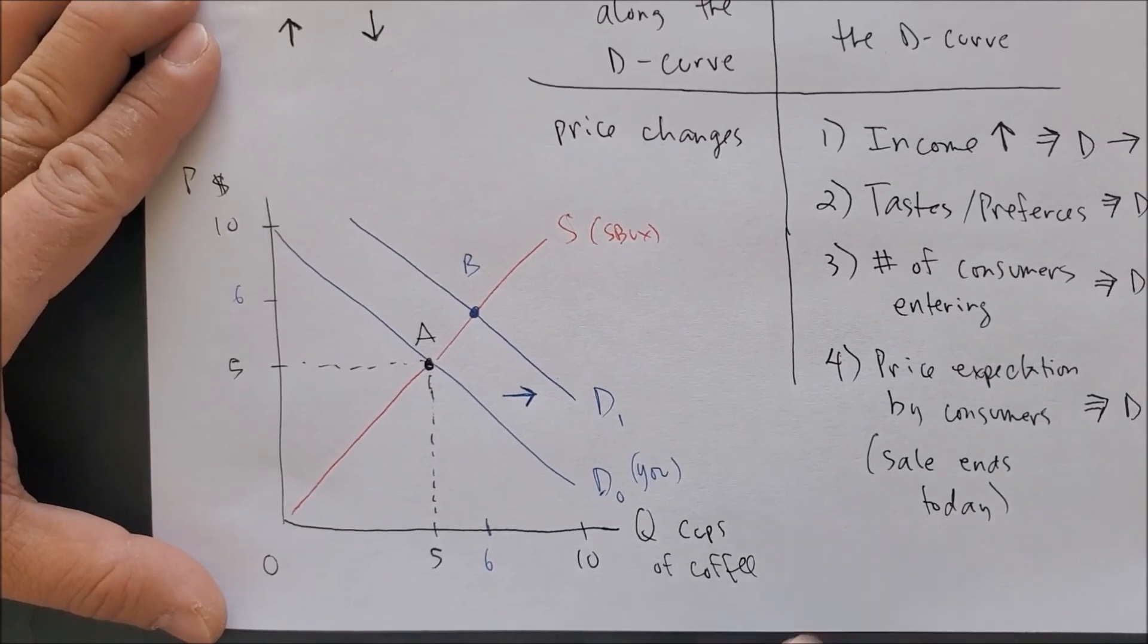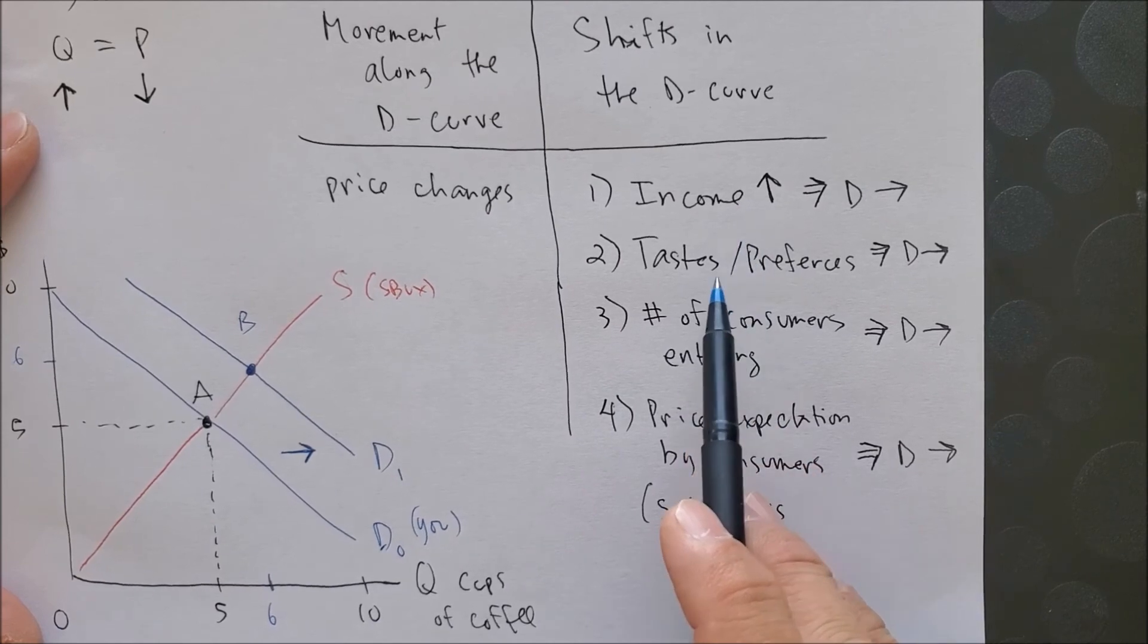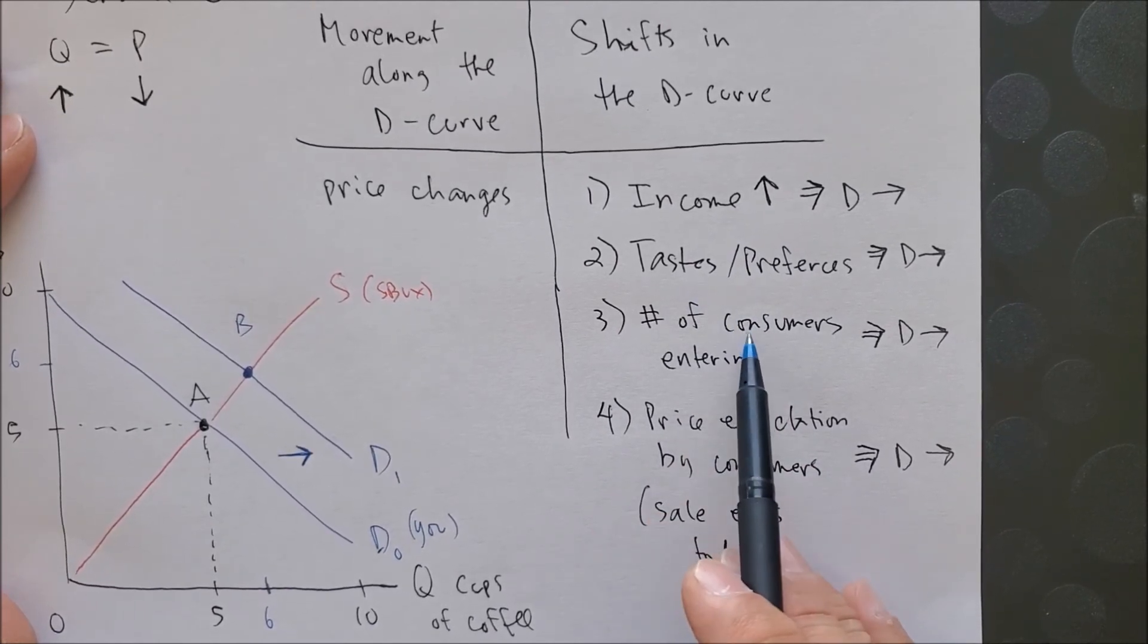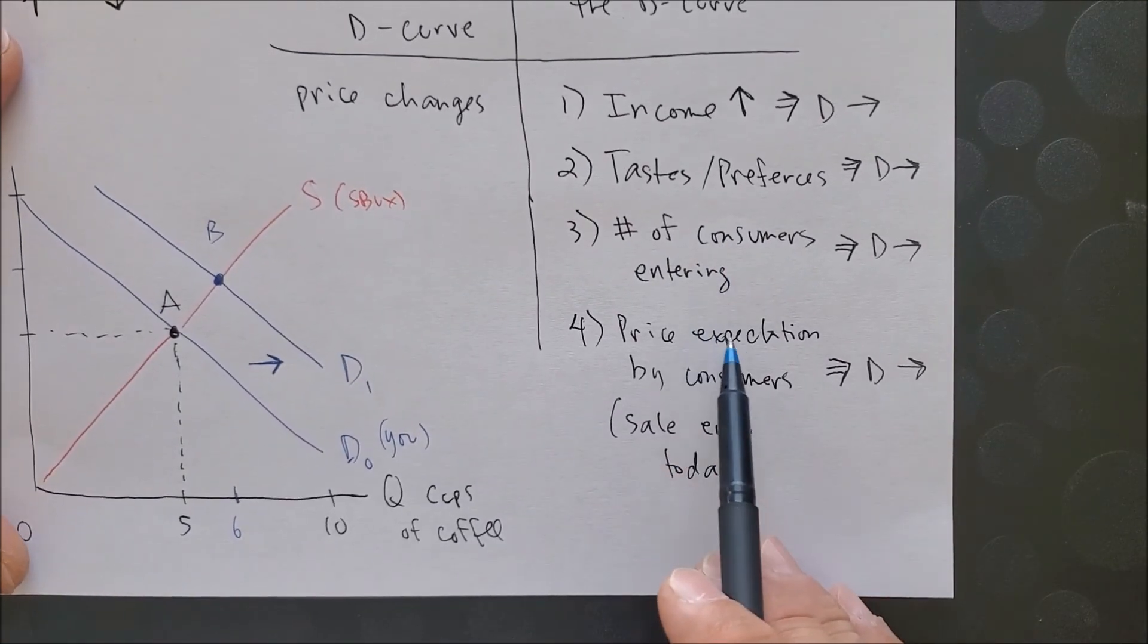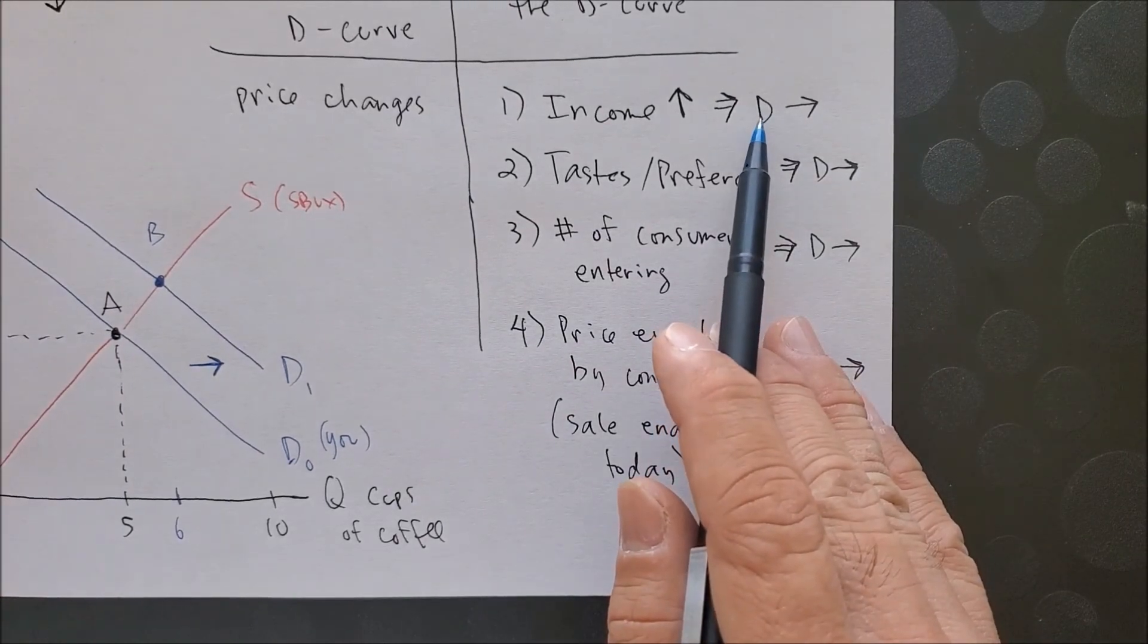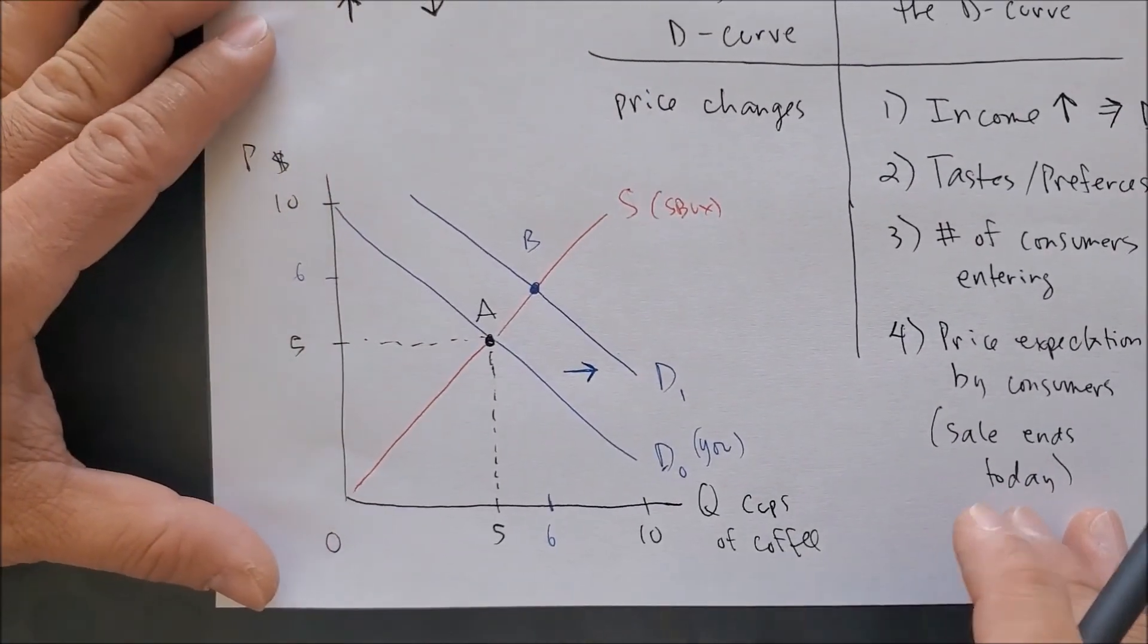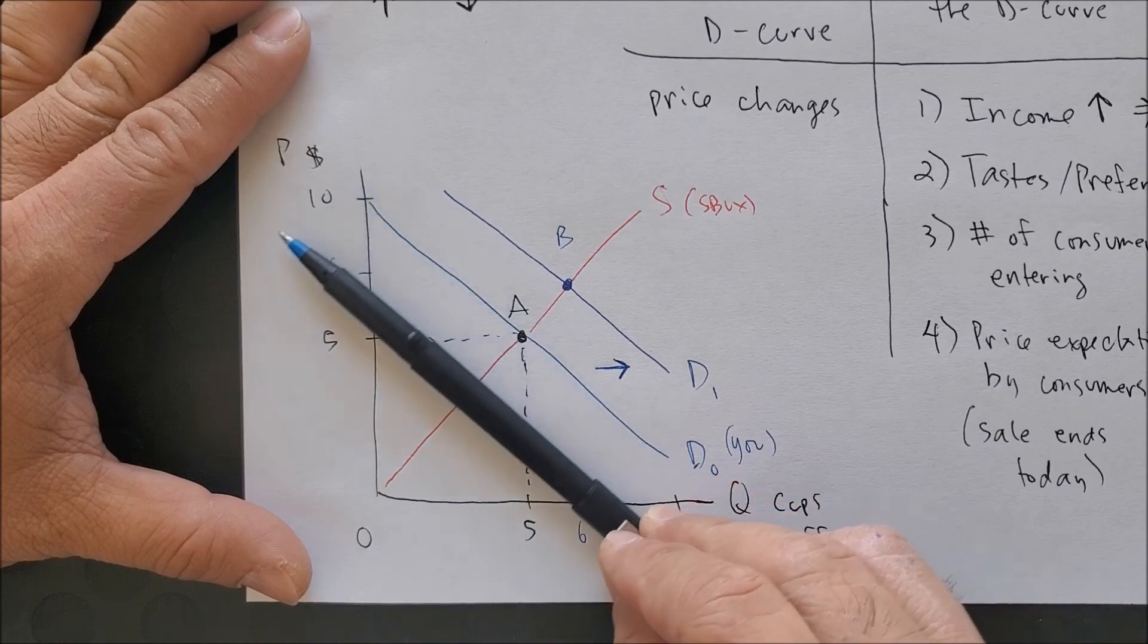The opposite would be true that if we were to decrease income, you are going to not like this good, consumers are now going to exit the market, or you expect the price of a good to decrease tomorrow. The demand curve would shift to the left, and we would see instead the demand shifting left as such.